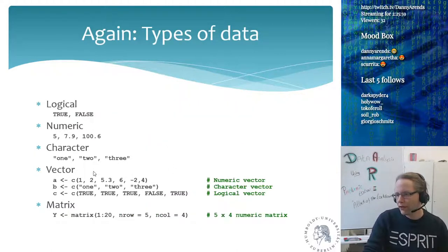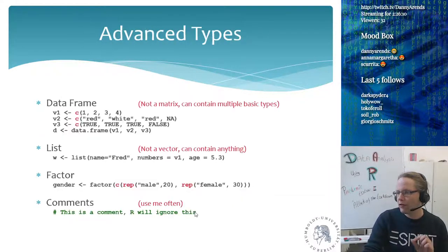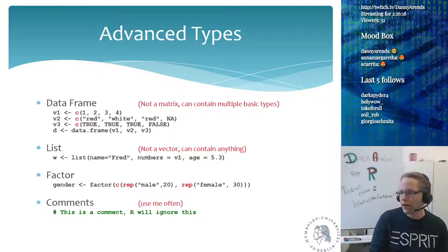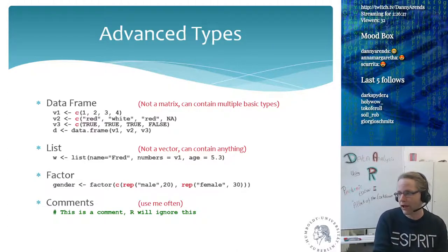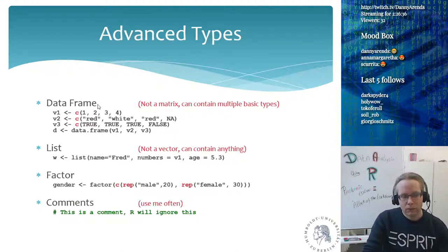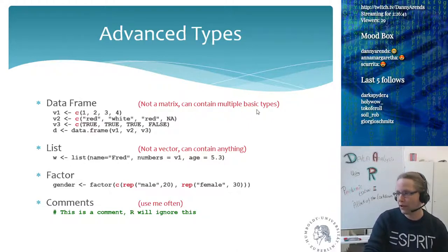A vector and a matrix can only be of a single type — so a vector can be either numeric, character, or logical, and a matrix is the same. If I want to define a matrix similar to what you have in Excel, where the first column contains numbers and the second column contains letters like F for female or M for male, then a data frame is what I need.